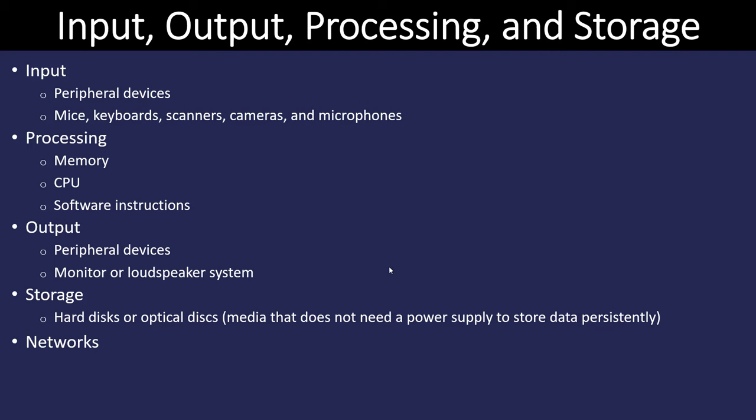When we talk about information systems, we want to identify that there are three states of data on a computer. First, data at rest or in storage — information stored on a hard disk, optical disk, or flash drive that doesn't need electricity to be persistent. Then we have data in transit, which is our networking — transferring information from one computer to another. The third state is data being processed, which is where the CPU works on it.